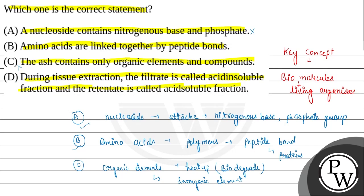Statement D: during tissue extraction, the filtrate is called acid-soluble fraction and the retained is called acid-soluble fraction। यह statement incorrect है। यहाँ पर जो filtrate होती है उसे acid-soluble pool कहते हैं, न कि acid-soluble fraction। तो Statement D भी यहाँ पर गलत हो जाता है।